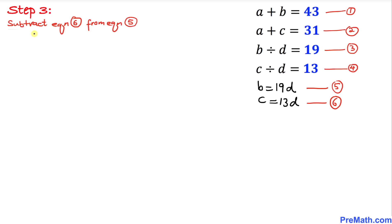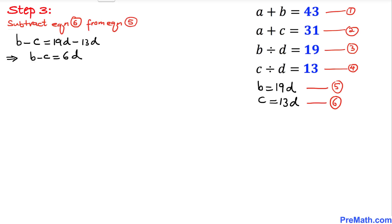In this next step, we are going to subtract equation six from equation number five. If we do this, B minus C is going to be 19D minus 13D, which simplifies to B minus C equals 6D. I'll call this equation number seven.